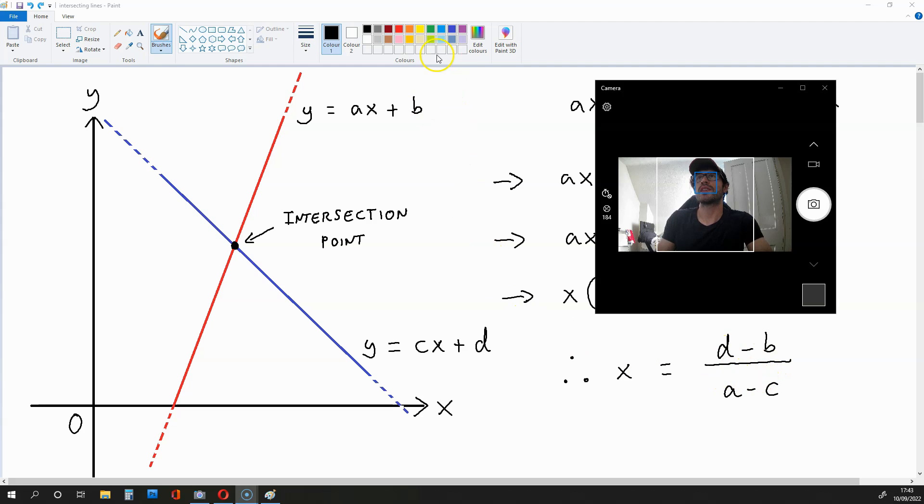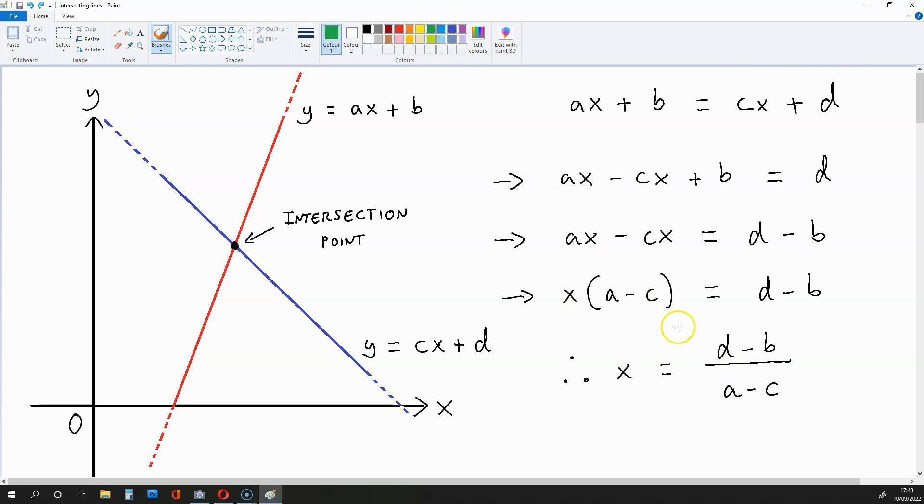Now here's what's really cool. If we plug this value of X into any of these equations, Y equals AX plus B, or Y equals CX plus D, we are going to get the Y coordinate of the intersection point. So if we get this and plug it into this or plug it into this, we are going to get the Y coordinate of this point.